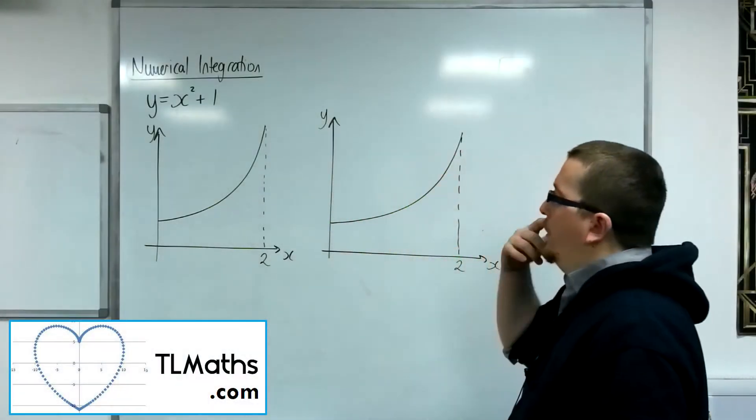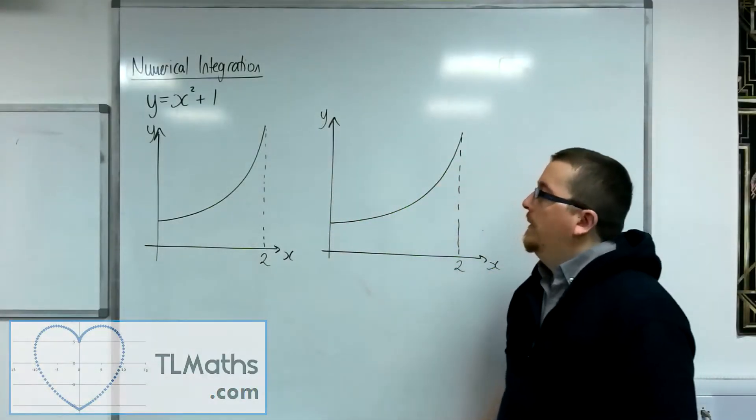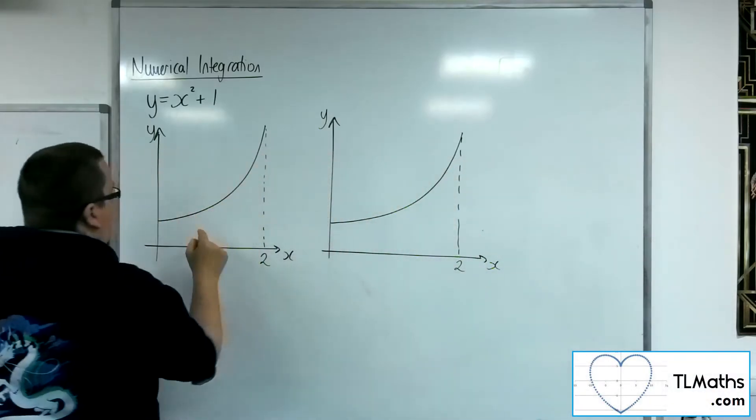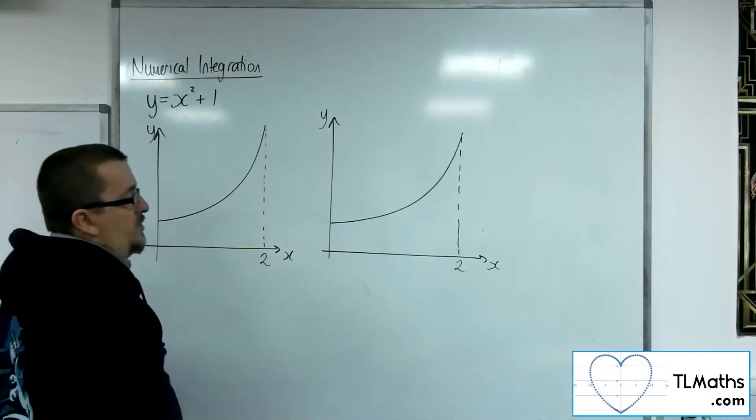Okay, so let's say I've got the curve y equals x squared plus 1, and I want to find the area between the curve and the x-axis between 0 and 2.